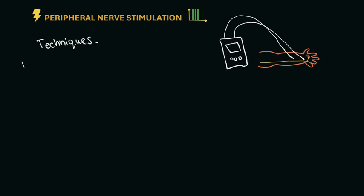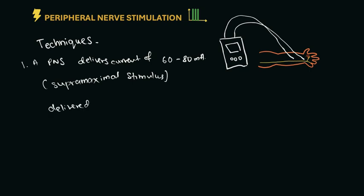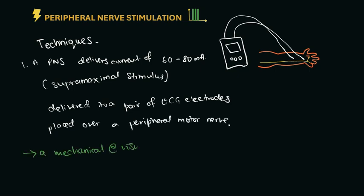So how do we actually perform peripheral nerve stimulation? A peripheral nerve stimulator, as you can see on the diagram, delivers a current of 60 to 80 mA, which is a supramaximal stimulus. It is delivered by a pair of ECG electrodes placed on the peripheral nerve that we want to stimulate. Thereafter, a mechanical or visual response is observed by the muscle twitch or graphical representation seen on the monitor of the peripheral nerve stimulator.